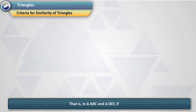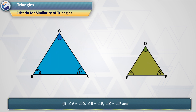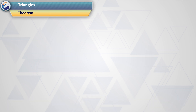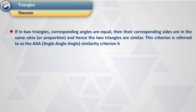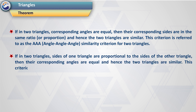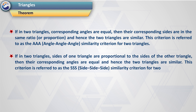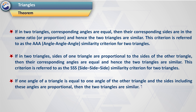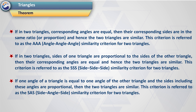Criteria for similarity of triangles. In triangle ABC and triangle DEF, if: 1, angle A = angle D, angle B = angle E, angle C = angle F, and 2, AB/DE = BC/EF = CA/FD, then the two triangles are similar. If corresponding angles are equal, then their corresponding sides are in the same ratio — this is the AAA (Angle-Angle-Angle) similarity criterion. If sides of one triangle are proportional to the sides of another, then corresponding angles are equal — this is the SSS (Side-Side-Side) criterion. If one angle of a triangle equals one angle of the other and the sides including these angles are proportional, then the two triangles are similar — this is the SAS (Side-Angle-Side) similarity criterion.